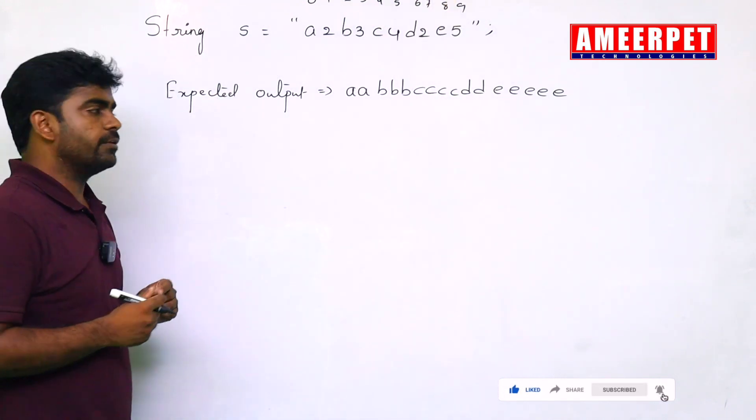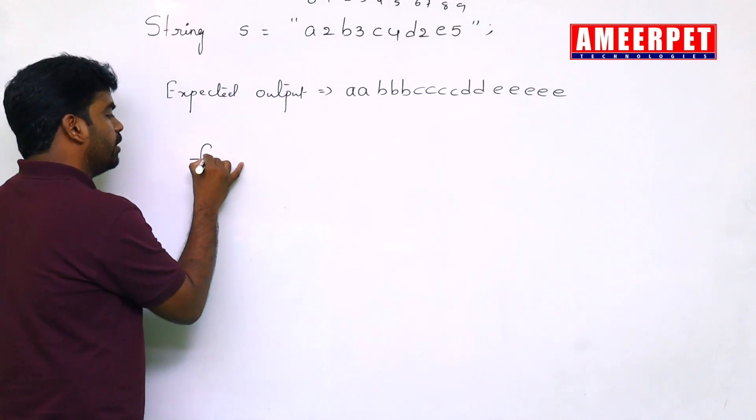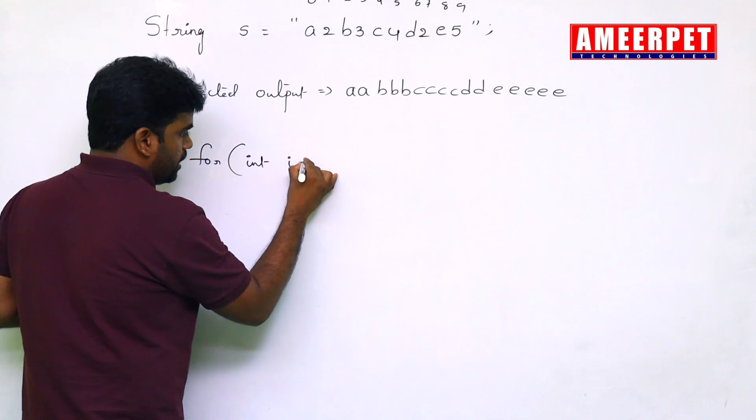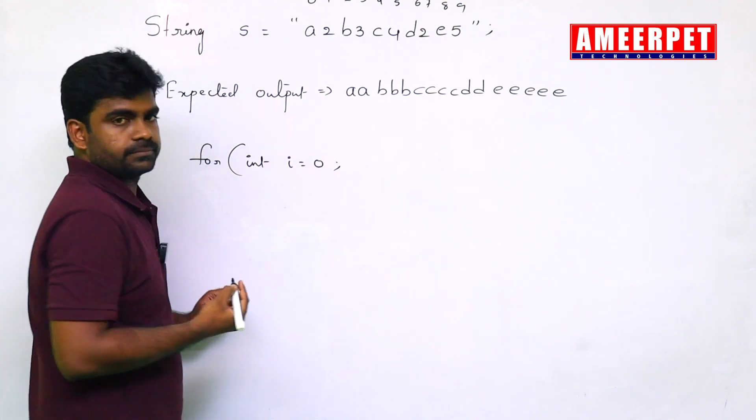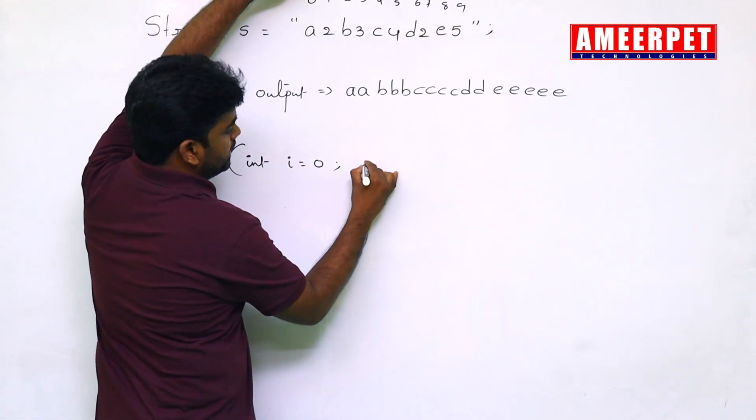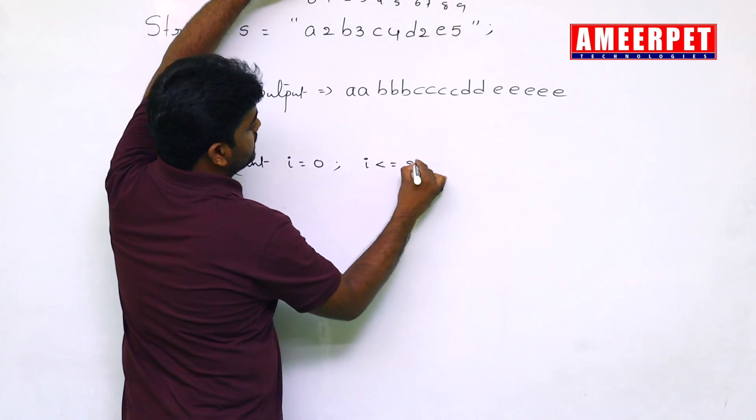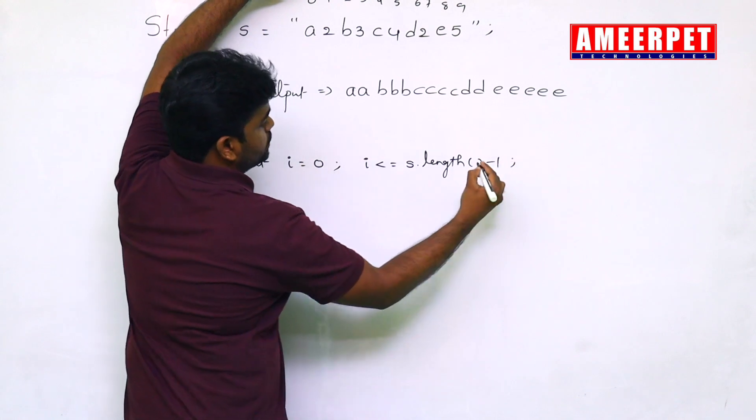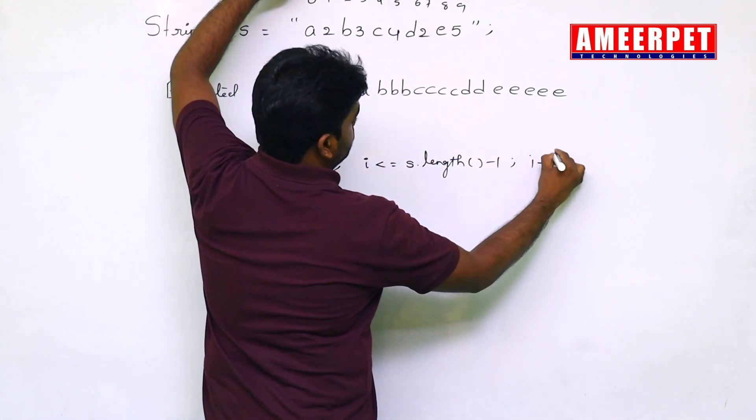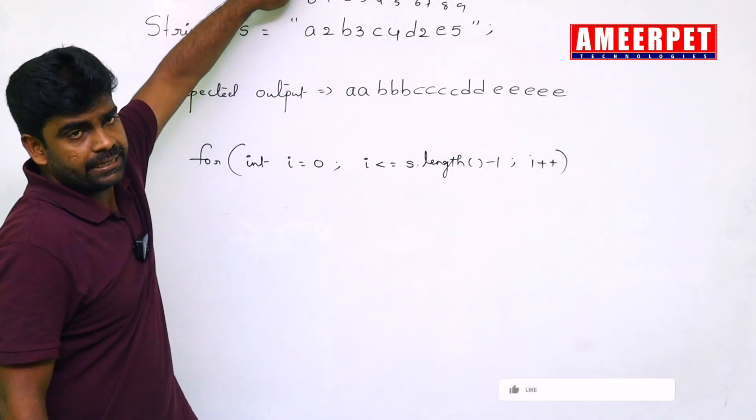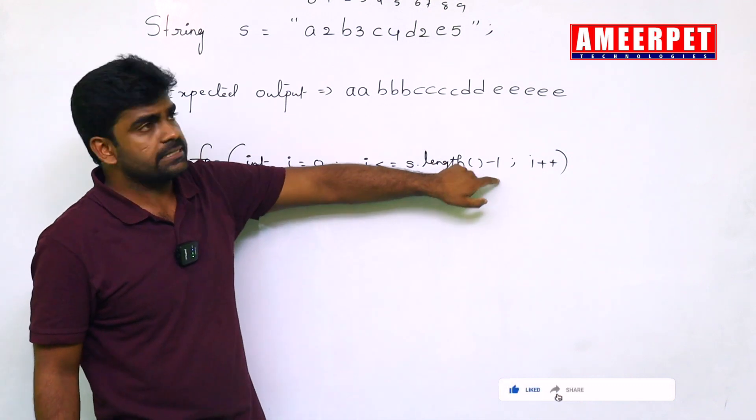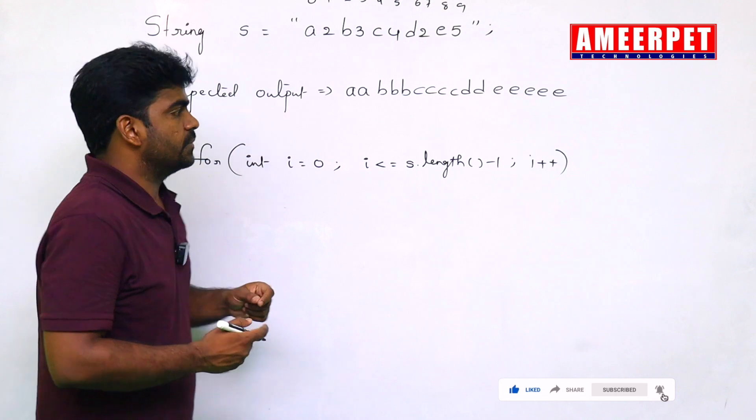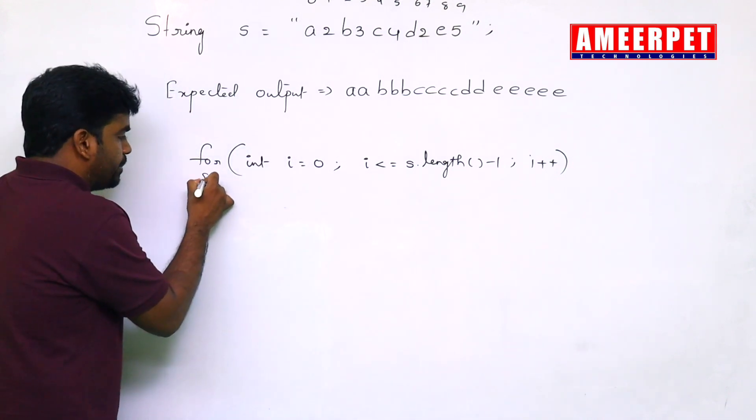Total 10 characters are there. We need to repeat the loop for integer i equals to 0, from the starting index, i less than or equals to S dot length minus 1, i plus plus. The total length is 10, 10 minus 1 is 9. Up to 9th index it will repeat.